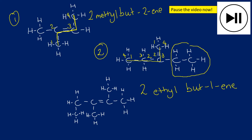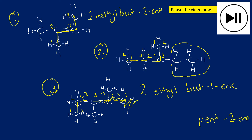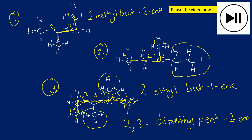For the third question: the longest chain that contains the functional group is five carbons — 1, 2, 3, 4, 5. Numbering from either end still applies. The double bond is between carbons two and three, so this is pent-2-ene. There are two methyl groups (dimethyl), and numbering gives their positions as two and three, making the full name 2,3-dimethylpent-2-ene.